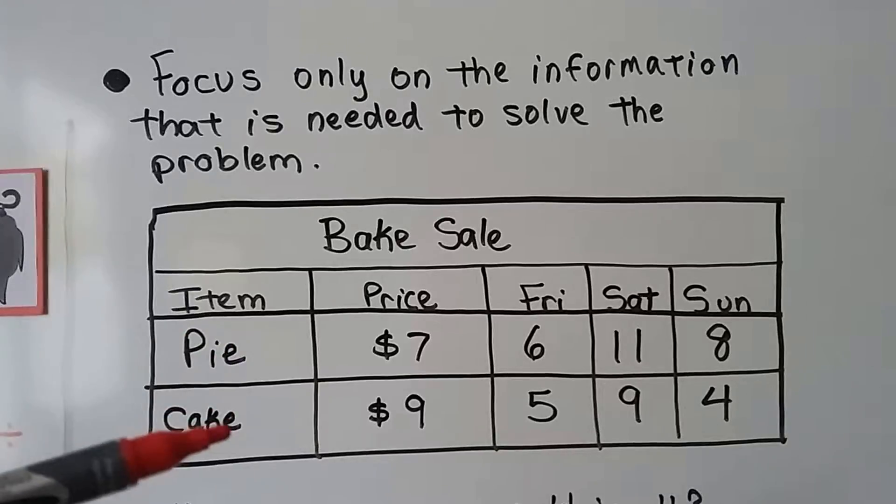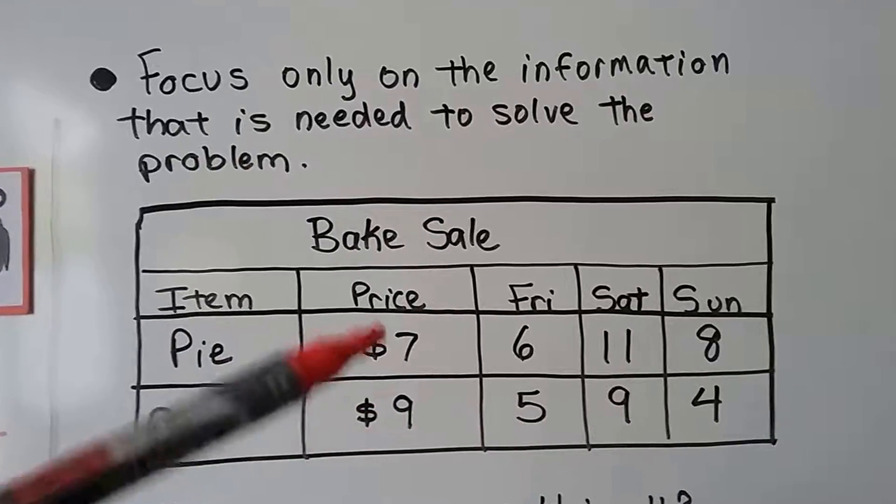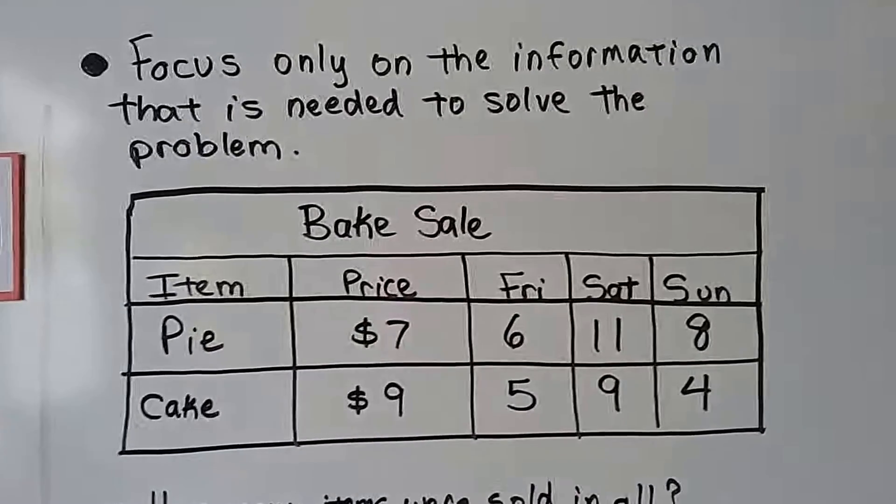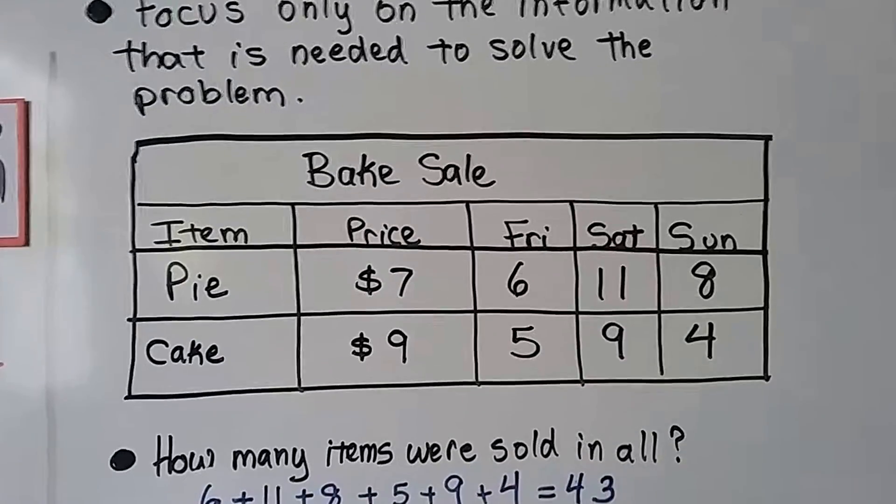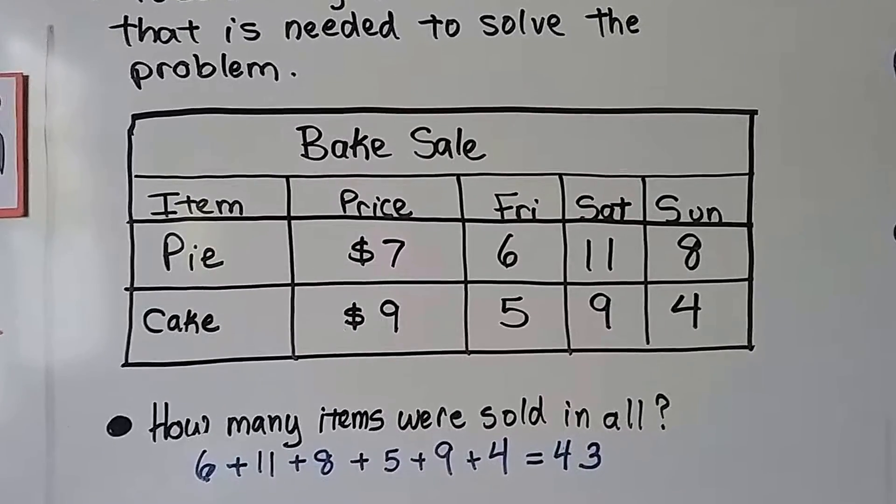Here we have a bake sale. There were pies. There were cakes. Here's the price of each and how many were sold on Friday, Saturday, and Sunday. The first question says, how many items were sold in all?